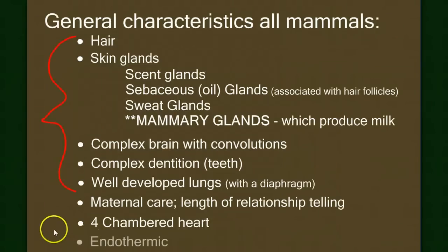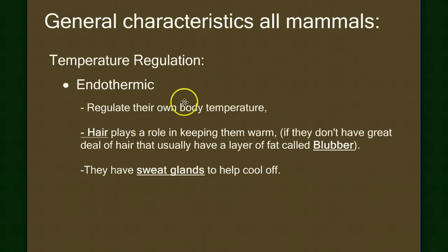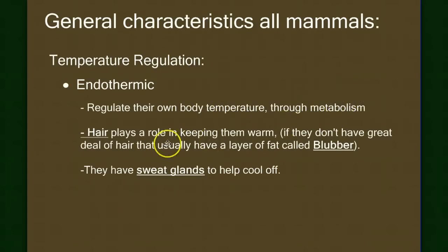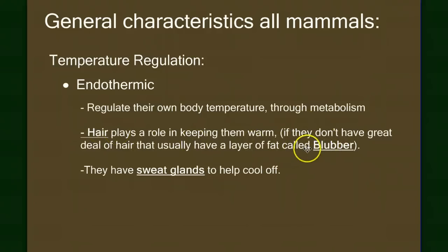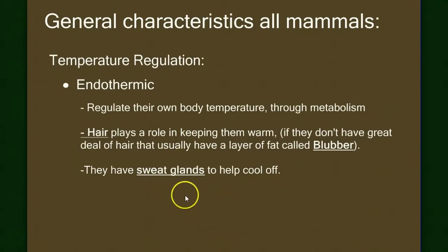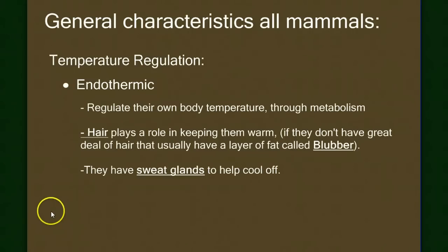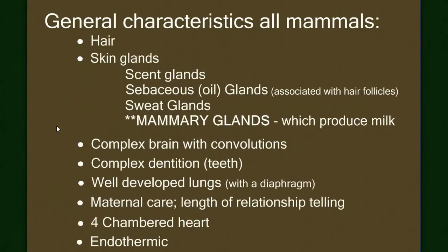Finally, all mammals are endothermic — they generate and regulate their own body temperature through their metabolism. Their high metabolic rate generates heat, and the hair that all mammals have helps keep them warm. Some marine mammals don't have as much hair but have a thick layer of fat called blubber. Hair or fat help trap heat, making them good endotherms. Mammals also have physiological means to cool down. Because they are endotherms, they can live in a broad range of habitats.